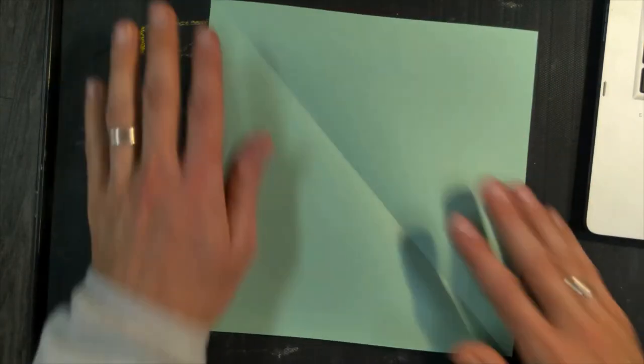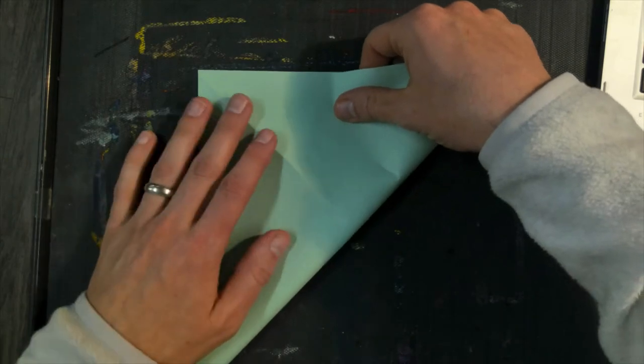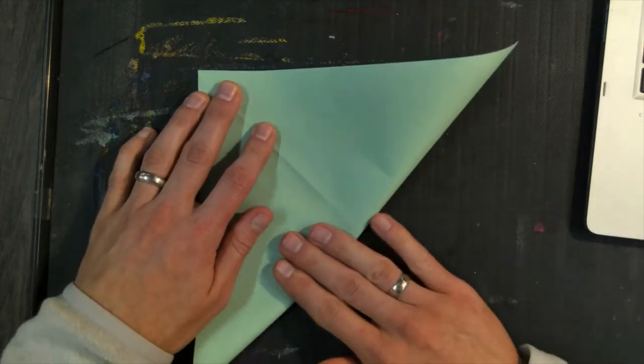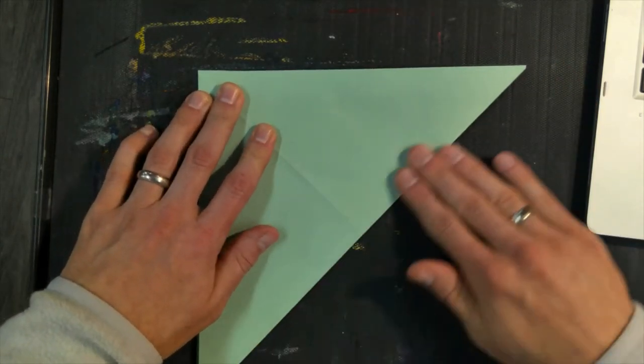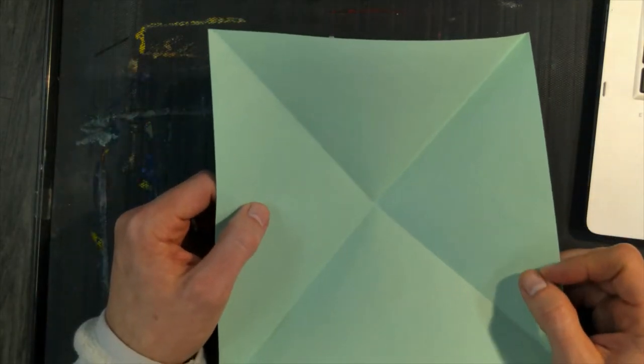You're going to unfold it again, and you're going to fold the other one. You're going to fold the other side this time, meet it up just like you did the first time, and unfold it. So you should have like an X shape. So go ahead and do that now.